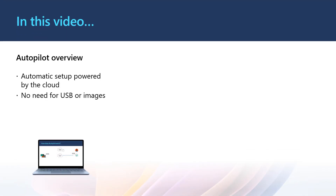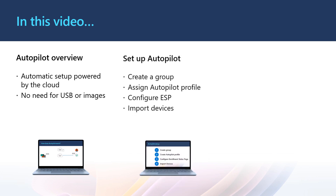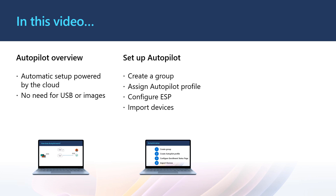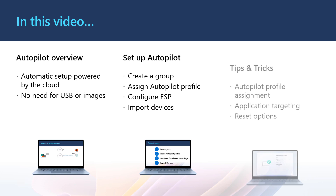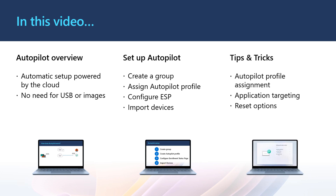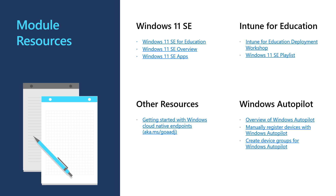In this video, we covered an overview of Autopilot and how it uses the power of the cloud to simplify onboarding for our students and teachers. I showed you how to set up Autopilot for Windows 11 SE, including creating a group, creating and assigning an Autopilot profile, configuring the enrollment status page, and then importing devices. Then I covered some tips and tricks for Autopilot profile assignment, dealing with application targeting, and resetting devices. Make sure you subscribe to our channel for future videos relating to Windows, Intune, and education scenarios. The video description includes links to Windows 11 SE, Autopilot docs, and our Getting Started with Cloud Native Windows Endpoints guide. Thank you.